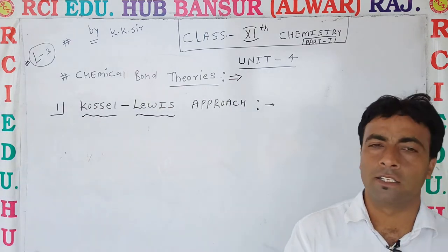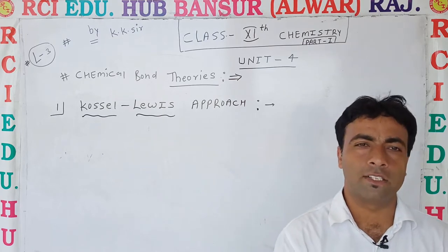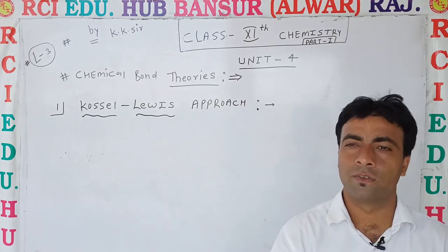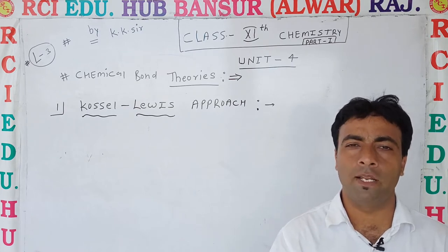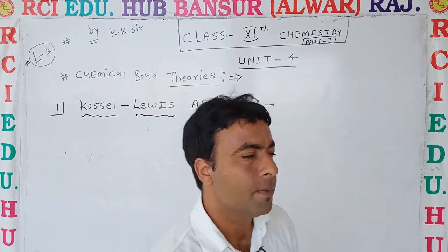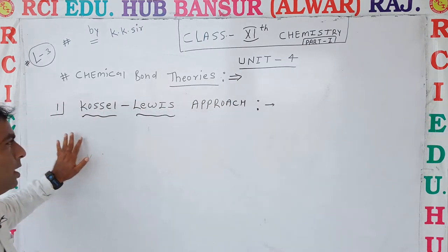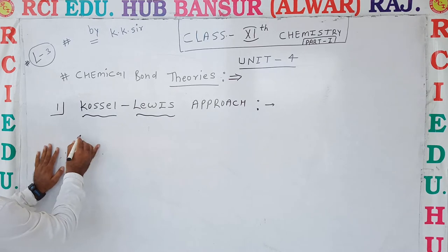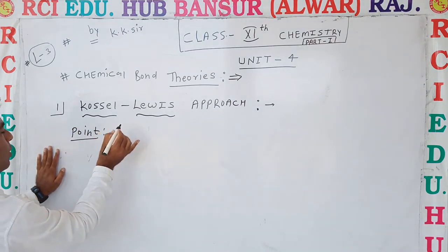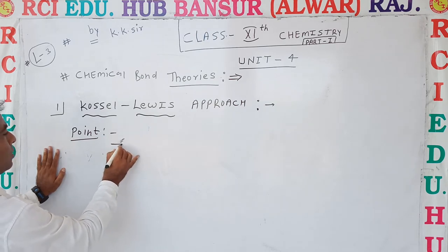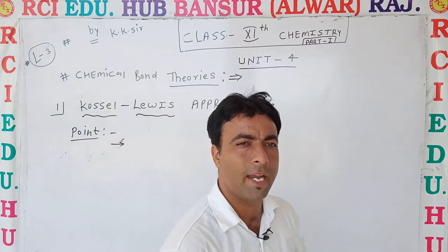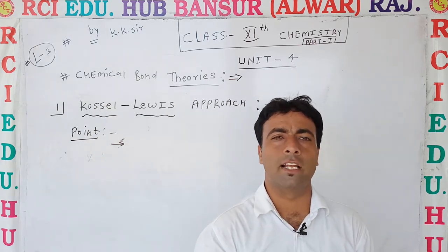The Kossel-Lewis approach represents one step toward the modern concept of chemical bond. There will be some points of this theory. According to this theory, every atom has valence shell electrons.